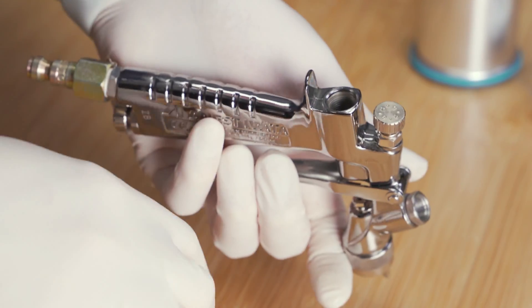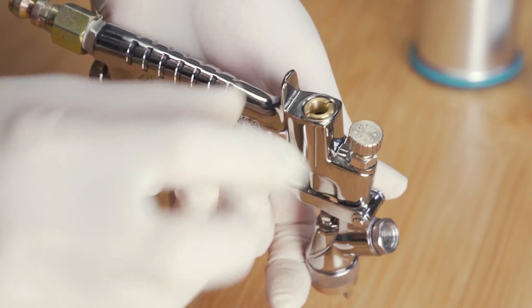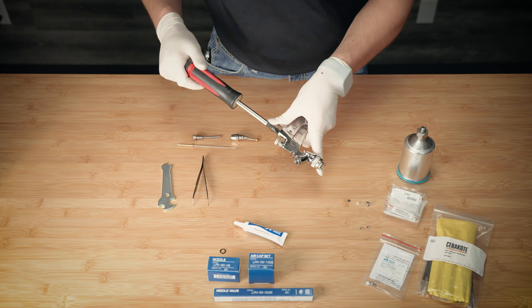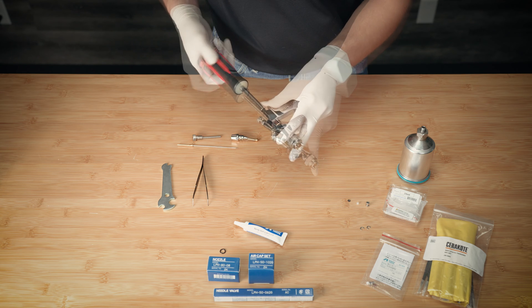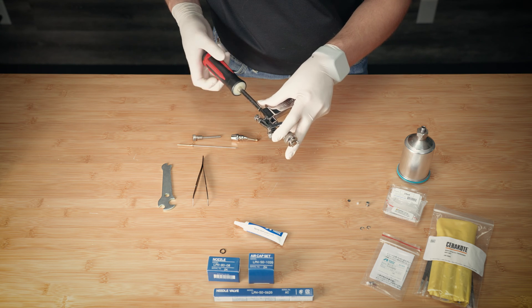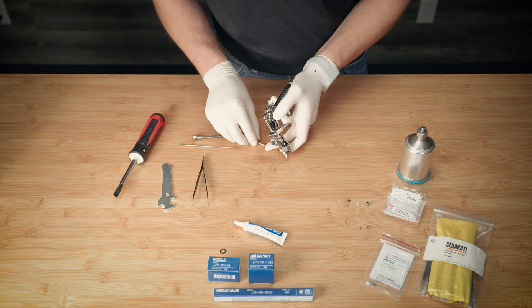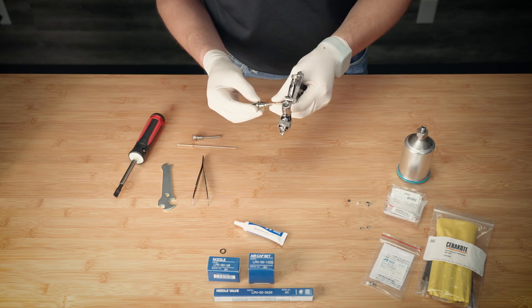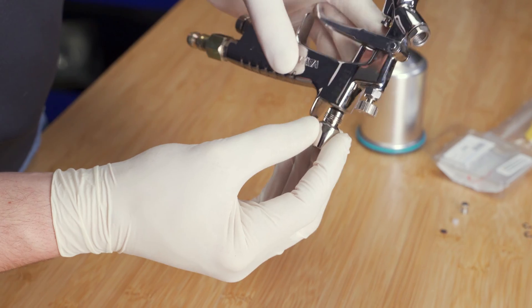Install the air valve into the body of the spray gun, and begin threading the air valve set screw into place. It may be helpful to hold the fluid adjustment guide vertically for installation into the spray gun. This will ensure that alignment of all components is correct.